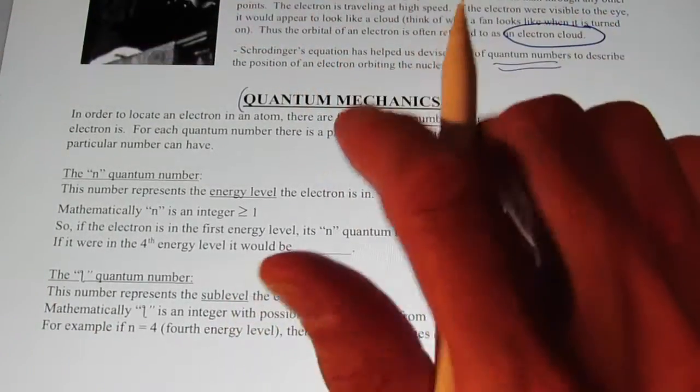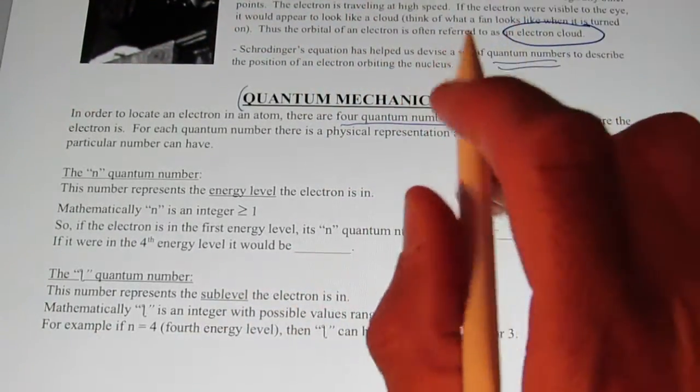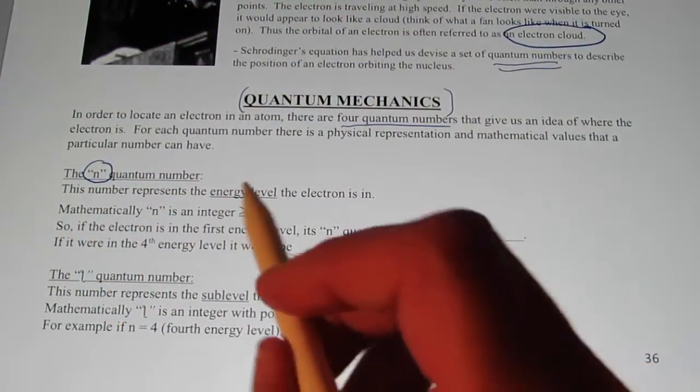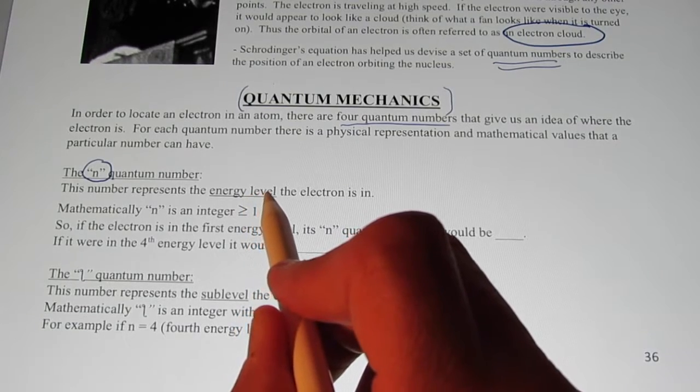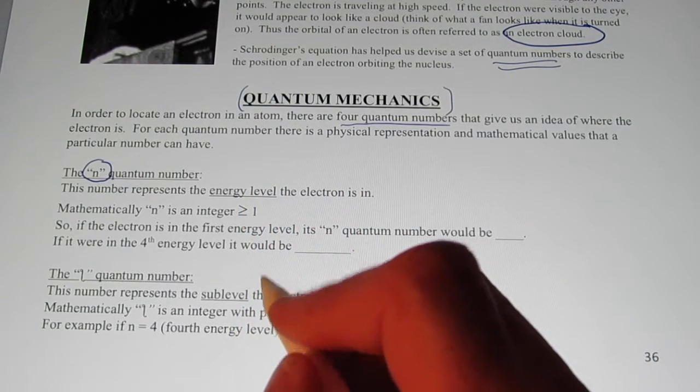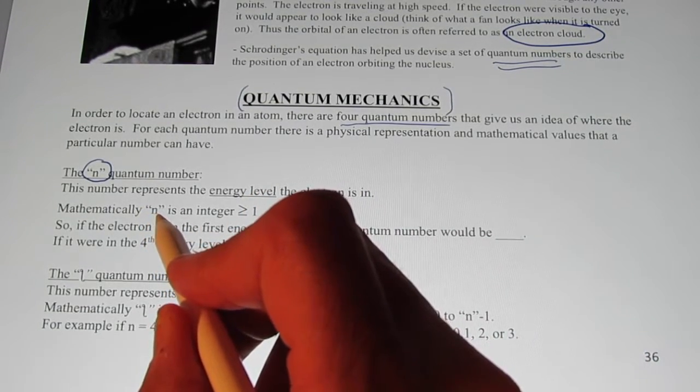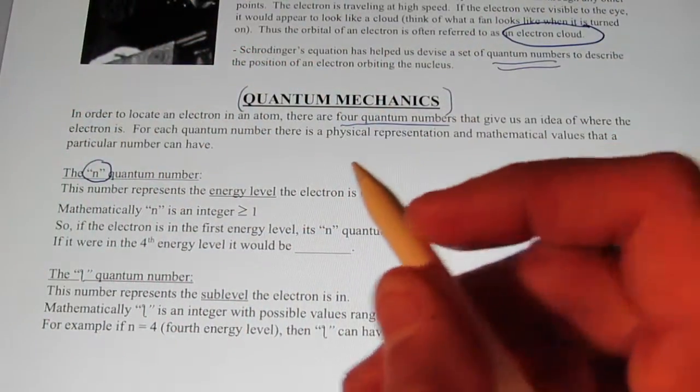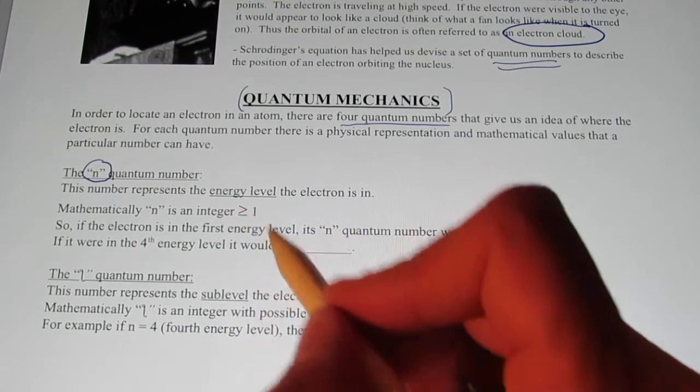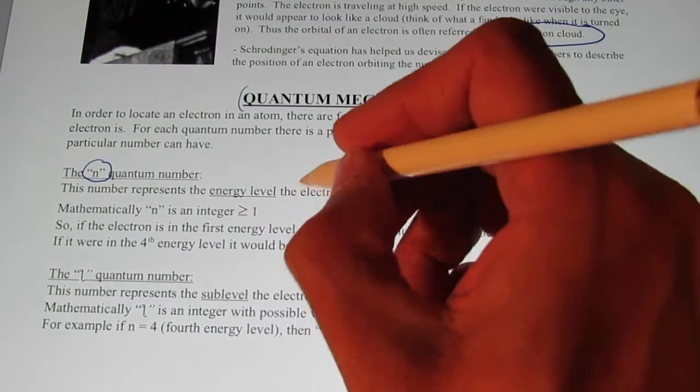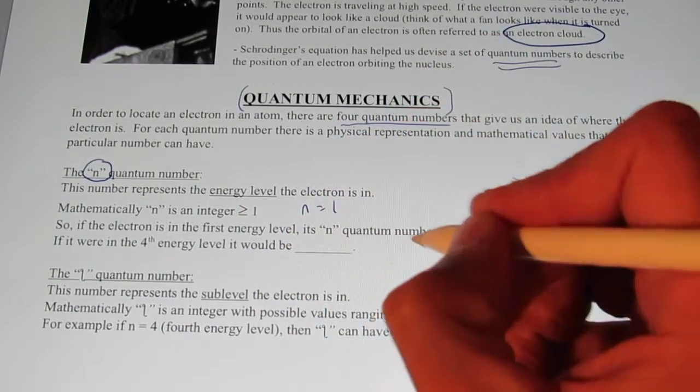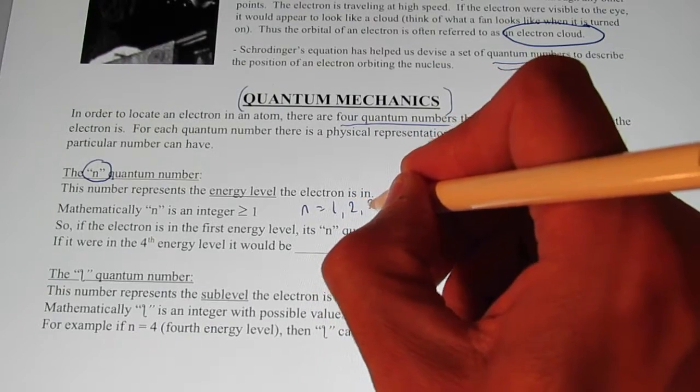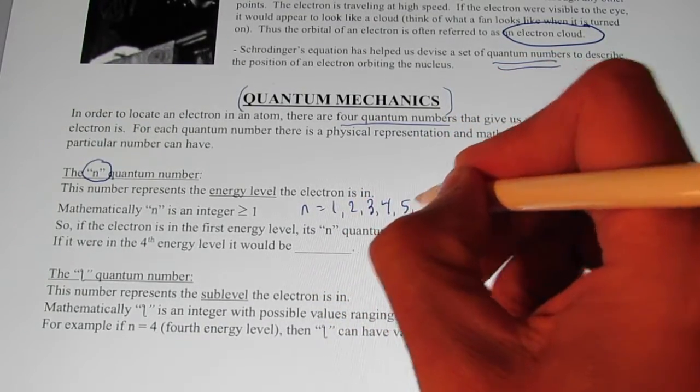The first quantum number is actually very, very easy to understand. It's called the n quantum number. This simply represents the energy level that the electron is in. Mathematically, the n quantum number is an integer. That means it's a whole number, folks. That has to be greater than or equal to one. So n could equal one, it could equal two, three, four, five, etc.